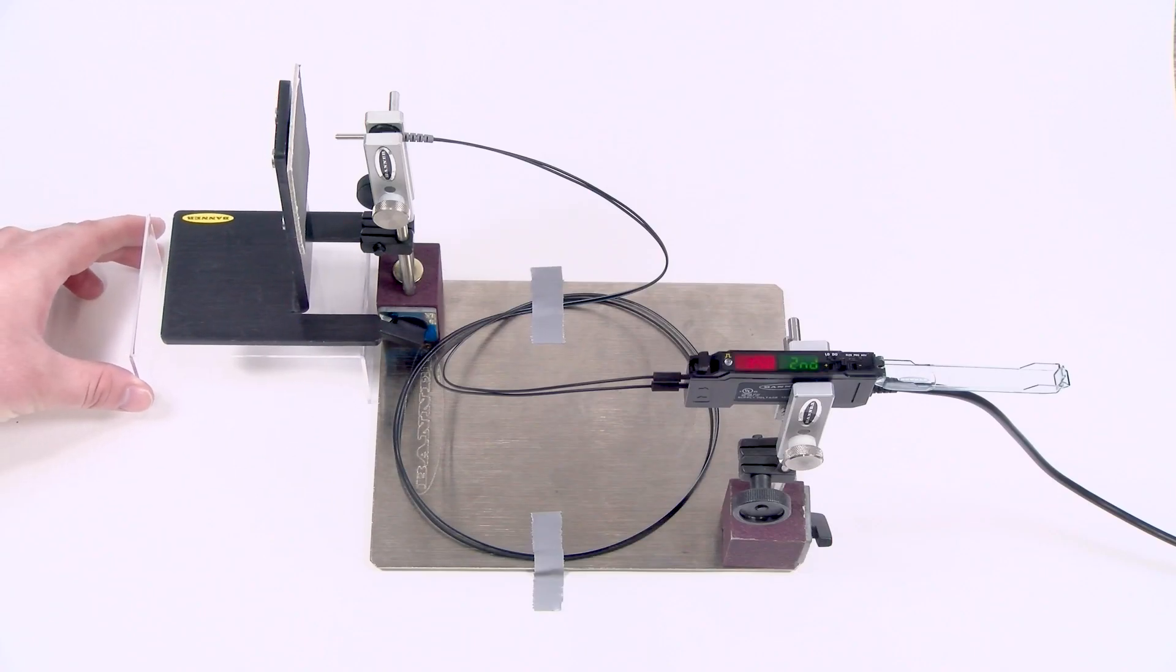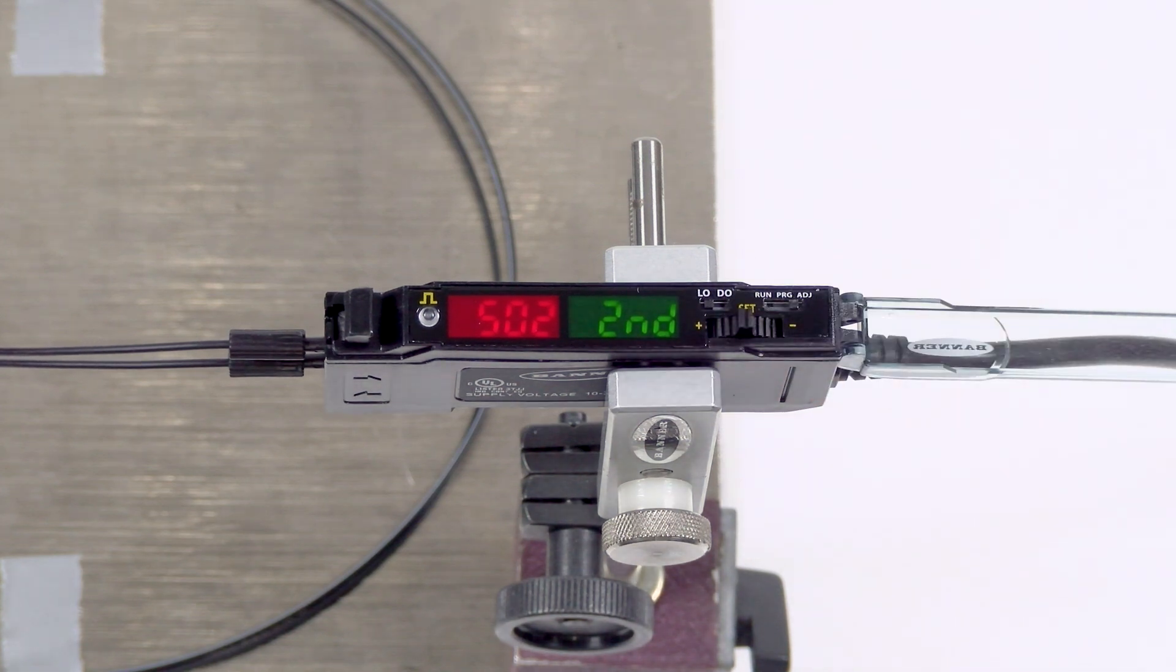Present the second target condition and press the rocker button again. The display will show pass indicating that the new conditions have been taught successfully. The display will now show the new switching threshold in green which is set halfway between the two taught conditions.